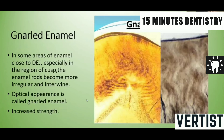The next structure is gnarled enamel. In some areas of enamel close to the dentino-enamel junction, especially in the region of the cusp, the enamel rods are arranged more complexly and they are intertwined. This optical appearance is called gnarled enamel, and it is related to the increased strength of the enamel in that region.